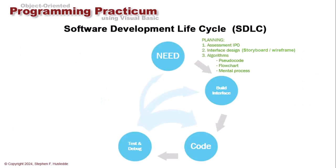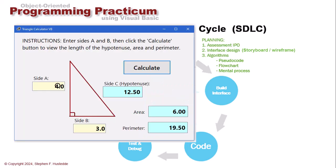We create our code and then we test it and debug it. I run the application, enter sides of 4 and 3 for sides A and B, click Calculate, and I got 12.5 as my hypotenuse. Now clearly that is wrong because the hypotenuse can't be more than the sum of the two sides. The area is correct — 4 times 3 times a half is 6 — but the perimeter is wrong because side C is wrong. If I have test data where I know what should be displayed, I can verify whether the application gives correct results. In this case it's not.